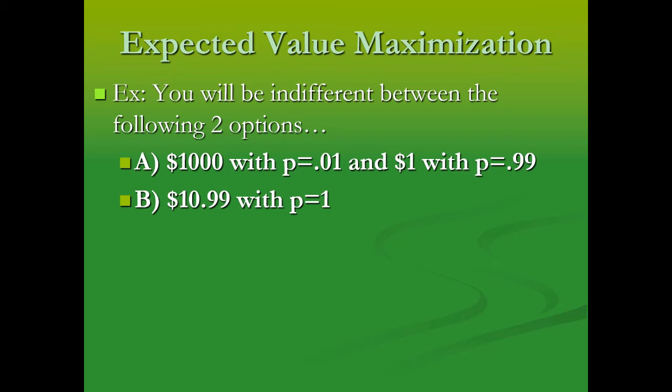we're going to be indifferent between the following two options: option A and option B. Option B has certainty—it's $10.99 with a probability of 1. But option A is a type of gamble where we're not sure as to what's going to happen with this outcome.